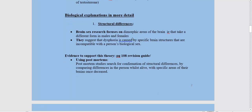Looking at structural differences first: brain sex theory or brain sex research focuses on what we call the dimorphic areas of the brain — the areas that take a different form in males and females. They suggest that dysphoria is caused by very specific brain structures that don't match with the person's biological sex. For example, someone who is biologically male may have a specific part of the brain which looks or is the size of a typical female's.